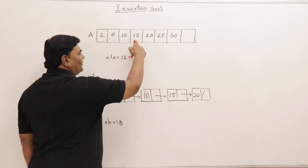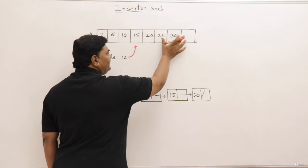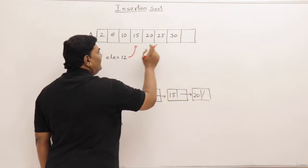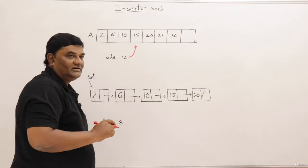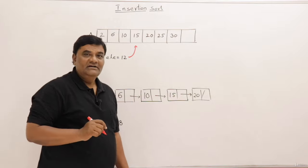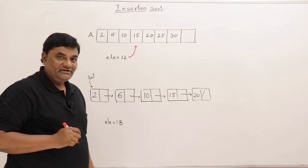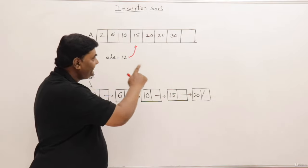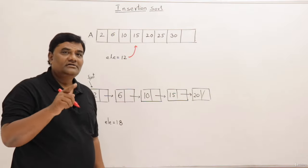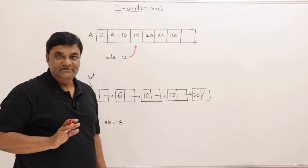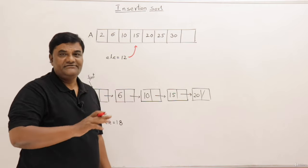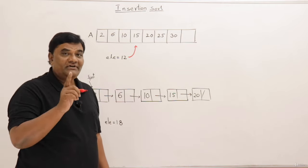For inserting 12 here what I have to do, I have to shift all these elements on the right hand side. Make a free space here then insert 12. So if you observe what I have done. I first found out where 12 should come, then I said I will be shifting the elements. So the important thing is you don't have to find out where it should come. Directly you can start shifting the elements. You don't have to find its position.